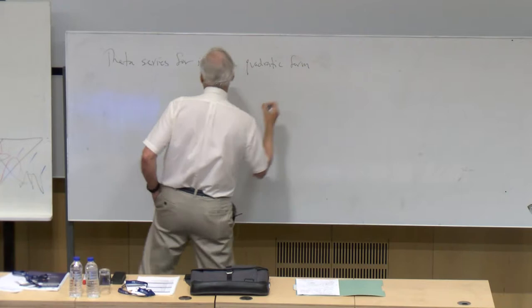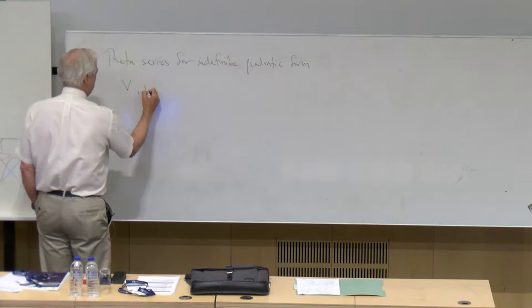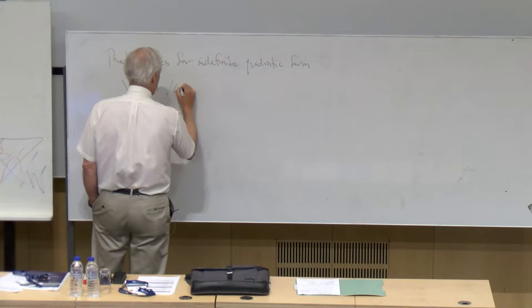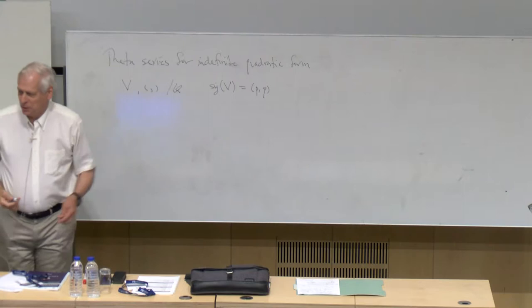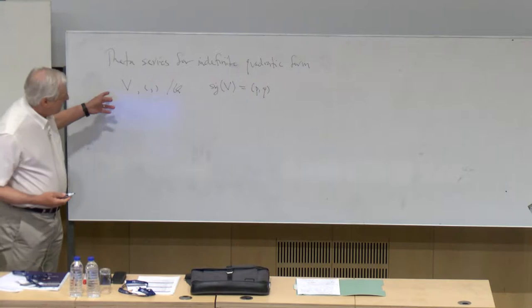This is an ancient subject, the theory of theta functions. The point, of course, is that if I have a vector space V with an inner product — a symmetric inner product over the rational numbers — I can talk about the signature. Let's, once and for all, assume that the signature is P times Q. You can see there's not going to be any number theory in this talk because P is already used, so it can't be a prime.